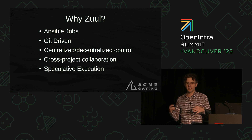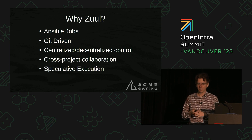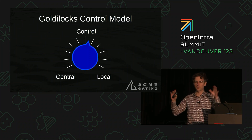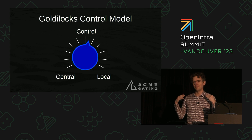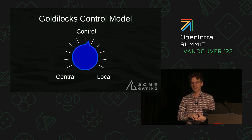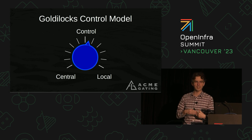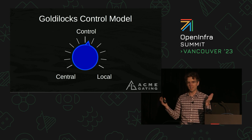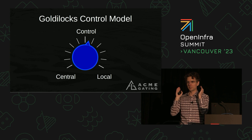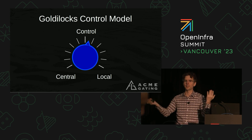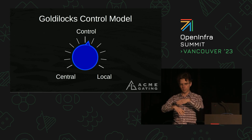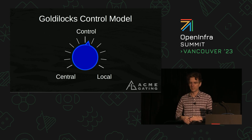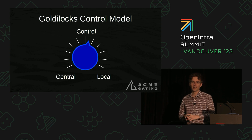Zool allows centralized or decentralized control — what I call the Goldilocks control model. Maybe you want everything centrally defined: you've got a CI team and they do everything. You can do that with Zool — you say these are the job definitions, these are the repos. Or maybe you want to give individual teams more control to run jobs on their own Git repositories. Maybe you need something in the middle: all projects run a basic set of jobs around code coverage and unit tests, and then projects add on what they need. Zool allows really anything anywhere on the spectrum.